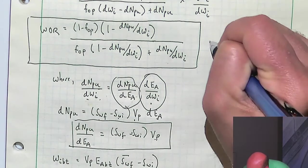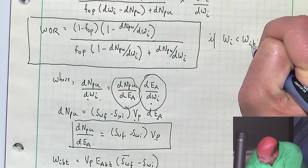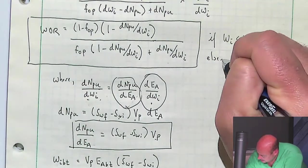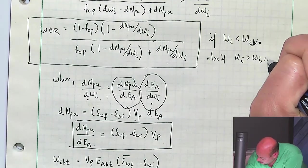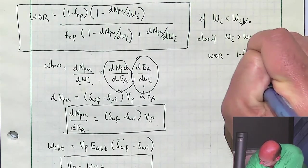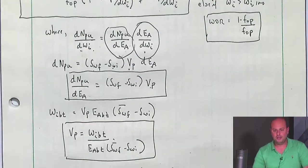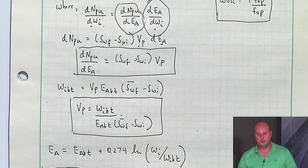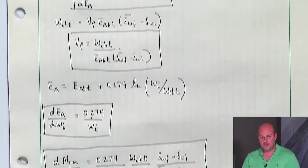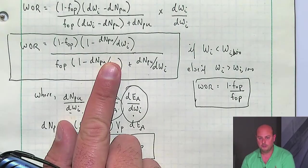This formula is appropriate if water injected is less than the water injected at 100% sweep efficiency. If WI is greater than the amount needed for 100% sweep efficiency, WOR simply reduces to (1 minus FOP) divided by FOP. We walked through all the steps and came up with this final solution. You calculate DNPU/DWI, plug it into your water-oil ratio formula, and calculate WOR.